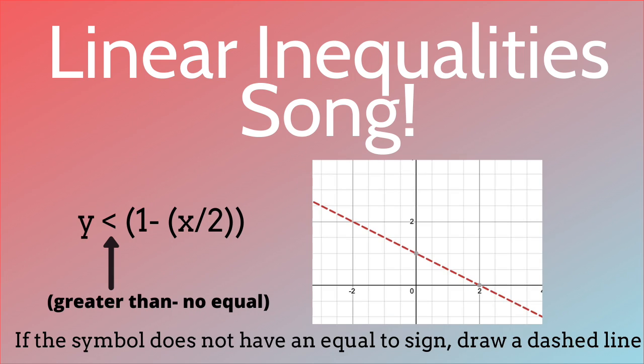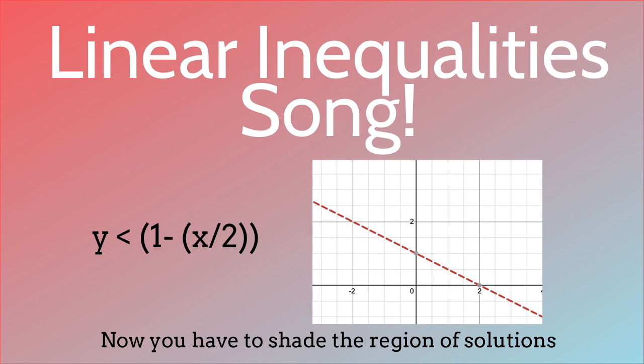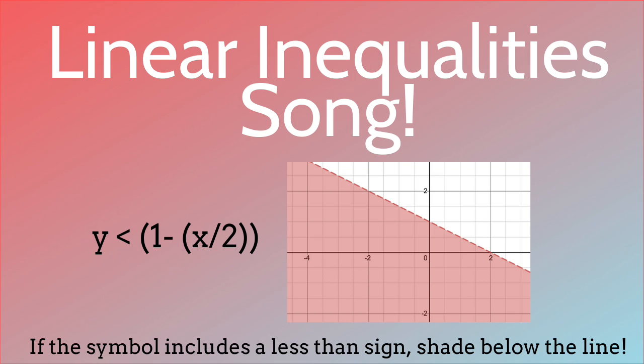If the symbol does not have an equal to sign, draw a dashed line. Now you have to shade a region of solutions. If the symbol includes a less than sign, shade below the line.